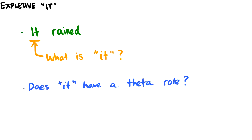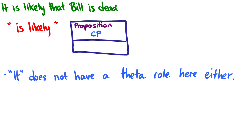So the question is, does it have a theta role? In fact, the question is, does rain even have any arguments in this sense? Let's take a look at another sentence to figure this out: It is likely that Bill is dead. This it does not have a theta role, and that is because the theta grid for is likely just takes a propositional CP as a complement. That Bill is dead is the only thing that is likely selects for. There is no theta role to give to it.